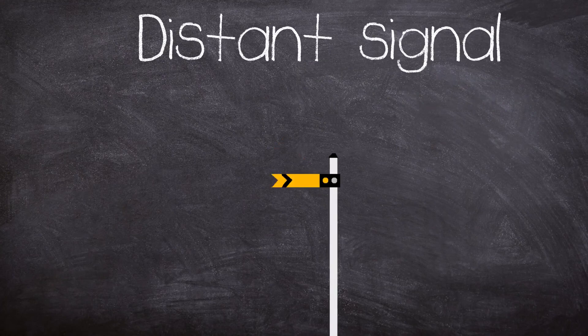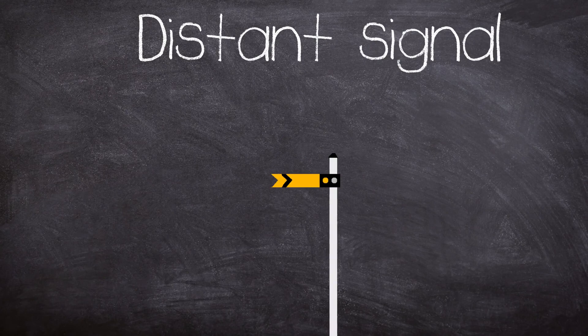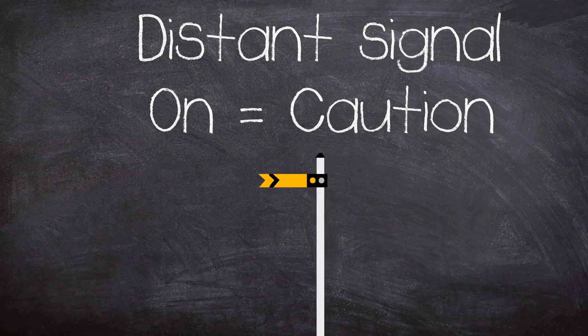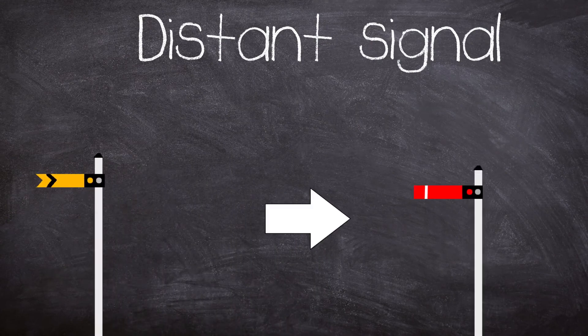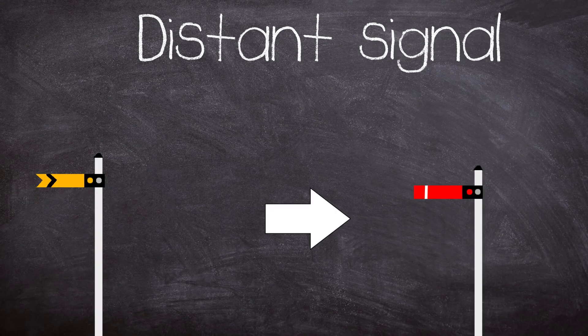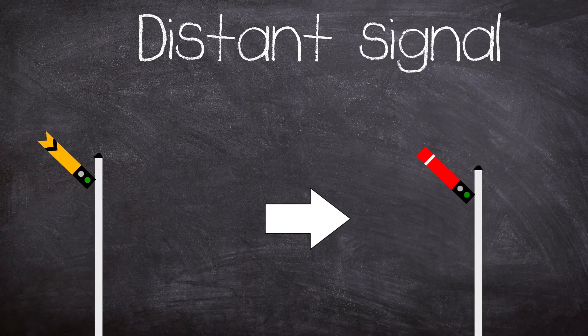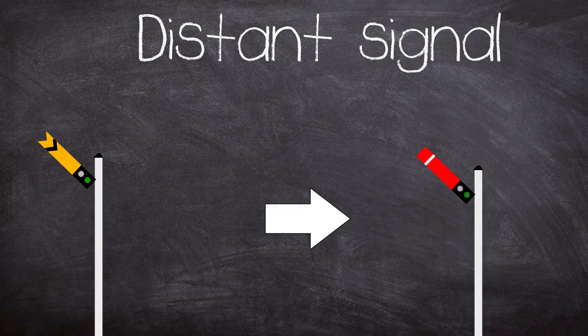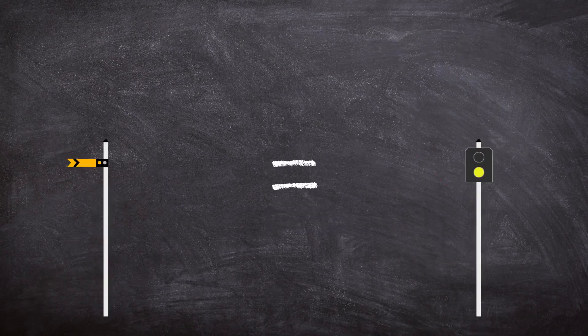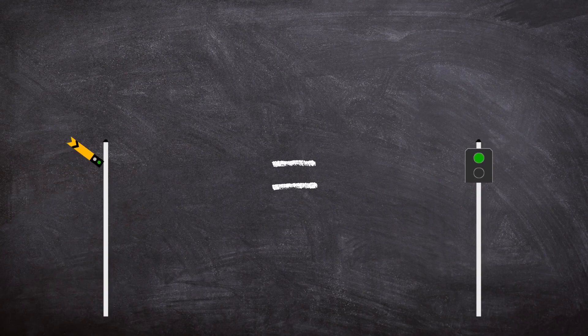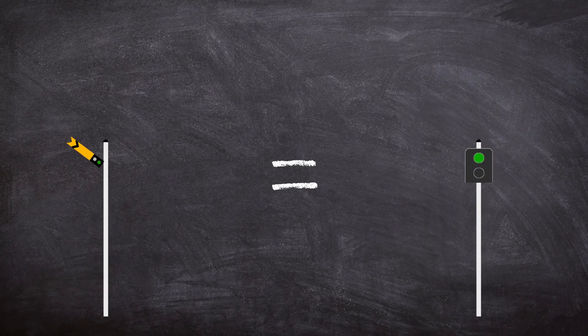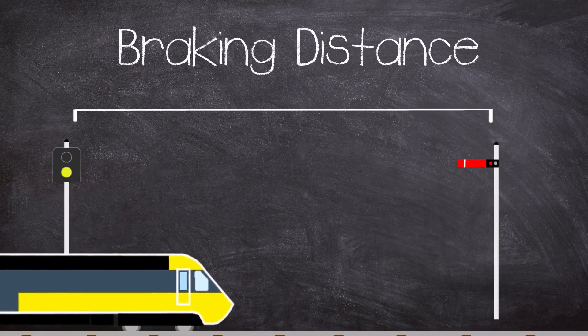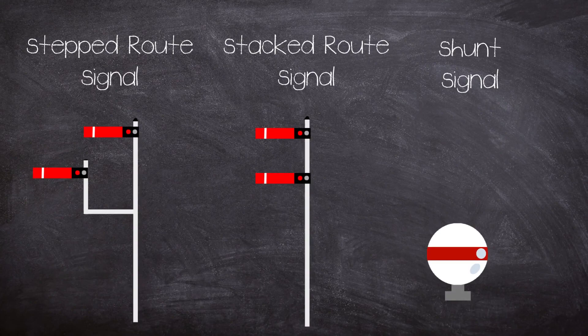To give advance warning of the state of the stop signal ahead, a distance signal will be provided. This semaphore is similar but yellow, and when on it tells the driver that the next signal could be showing danger and that they must be prepared to stop. When in the off position, it means that all the signals in the next block section are clear. Because the distance signal is only an indication of the next signal, there is no requirement to stop at it. Instead of a semaphore style distance signal, a color light can be provided. This can show green for the next signal is at green or off, and yellow for the next signal is on or at danger. All distance signals are placed at a braking distance from the next stop signal.